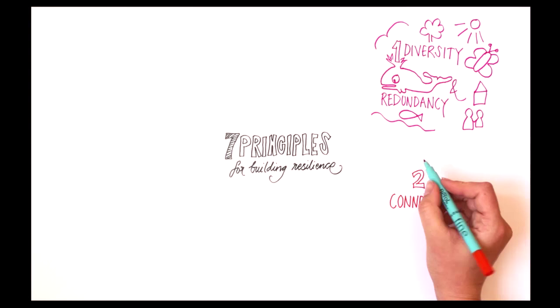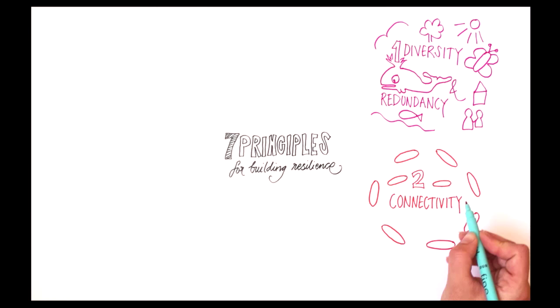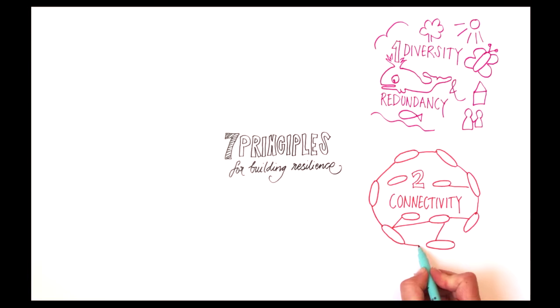Principle 2: Manage connectivity. Connectivity can be both a good and a bad thing. Well-connected systems can recover from disturbances more quickly, but overly connected systems may lead to a rapid spread of disturbances.